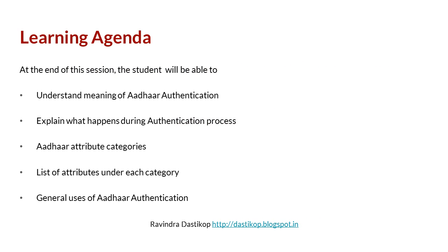The learning agenda of this session is as follows. At the end of this session, the student will be able to: 1. Understand meaning of Aadhaar authentication. 2. Explain what happens during authentication process. 3. Aadhaar attribute categories. 4. List of attributes under each category. And finally, the general uses of Aadhaar Authentication process.